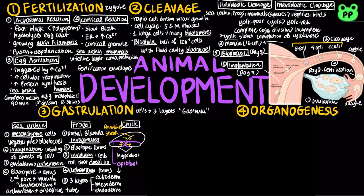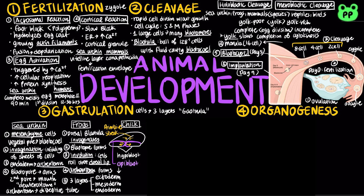During gastrulation of a chick, the epiblast, or the upper layer of the blastoderm, moves toward the midline of the blastoderm and then into the embryo toward the yolk. The midline thickens and forms the primitive streak. The movement of different epiblast cells gives rise to the endoderm, mesoderm, and ectoderm.